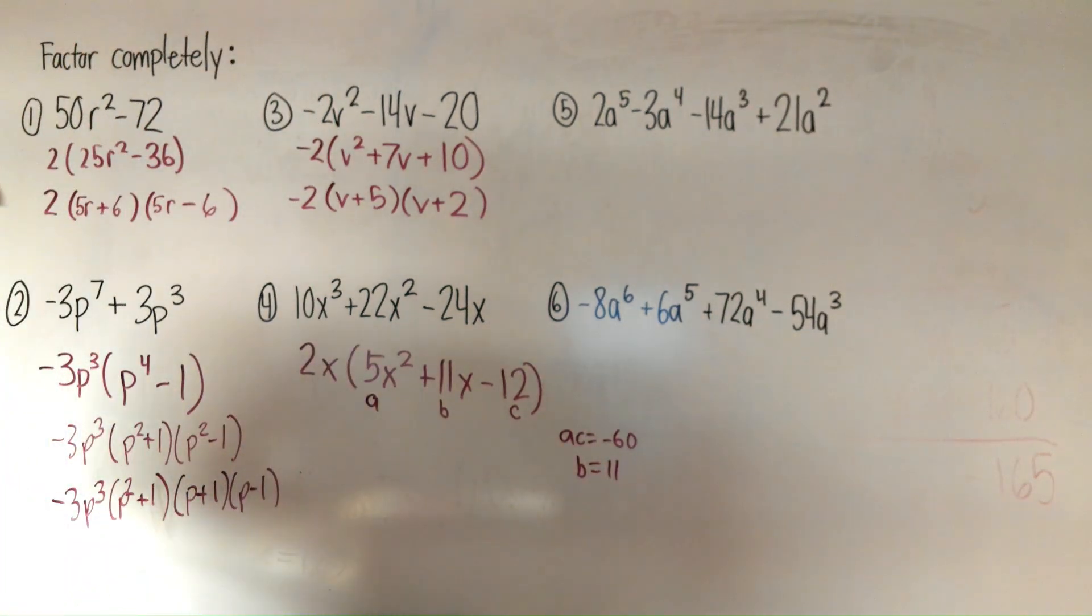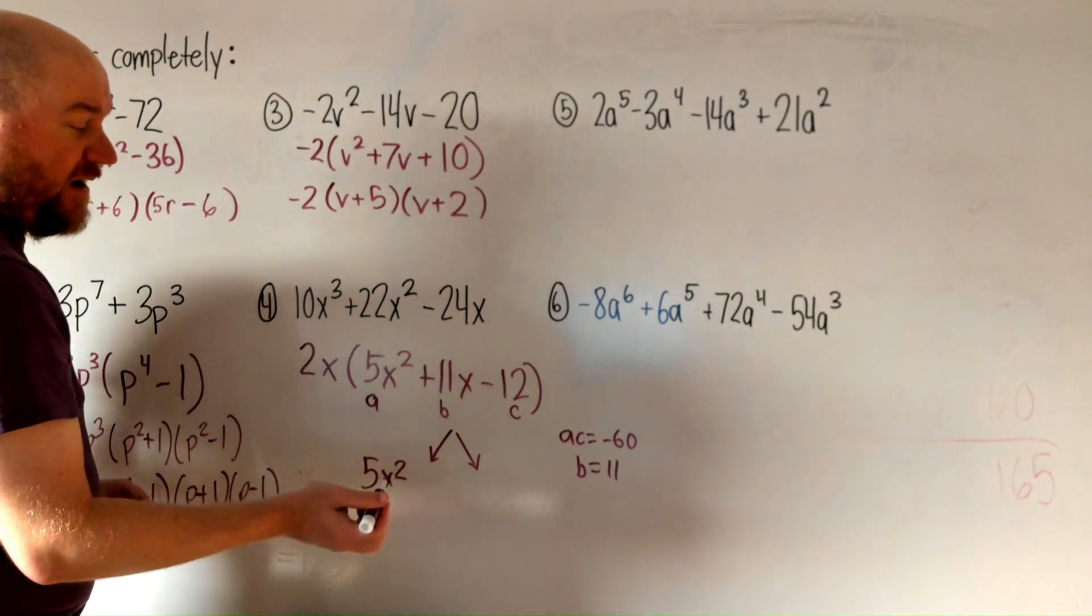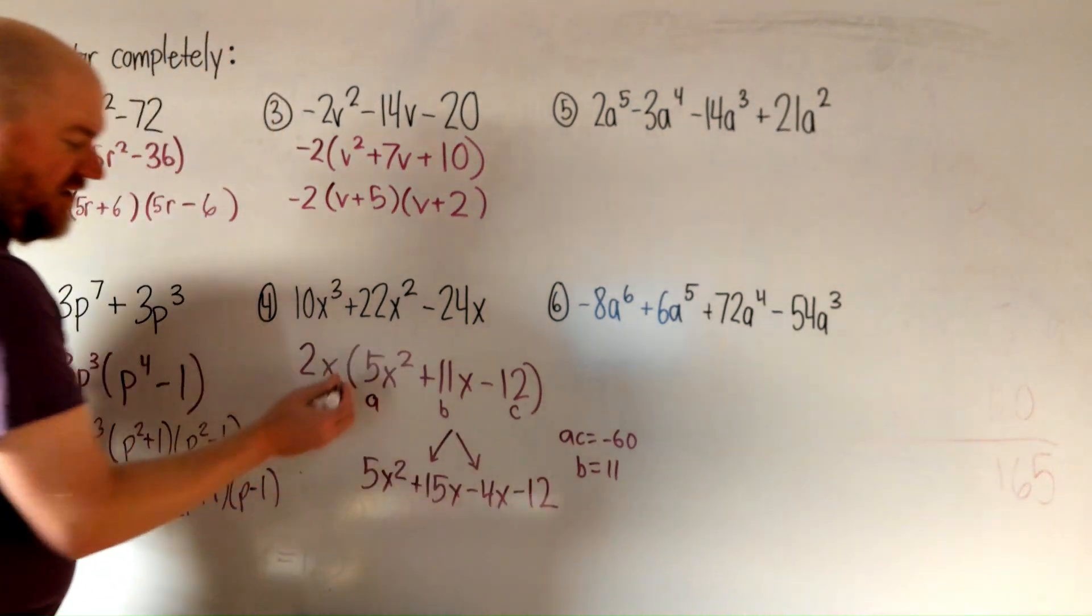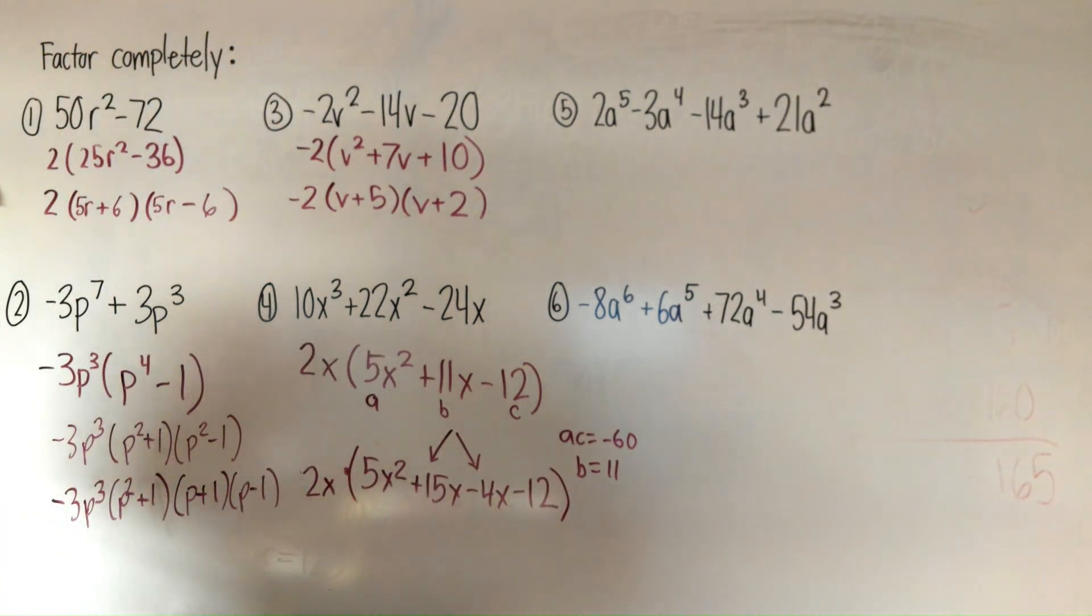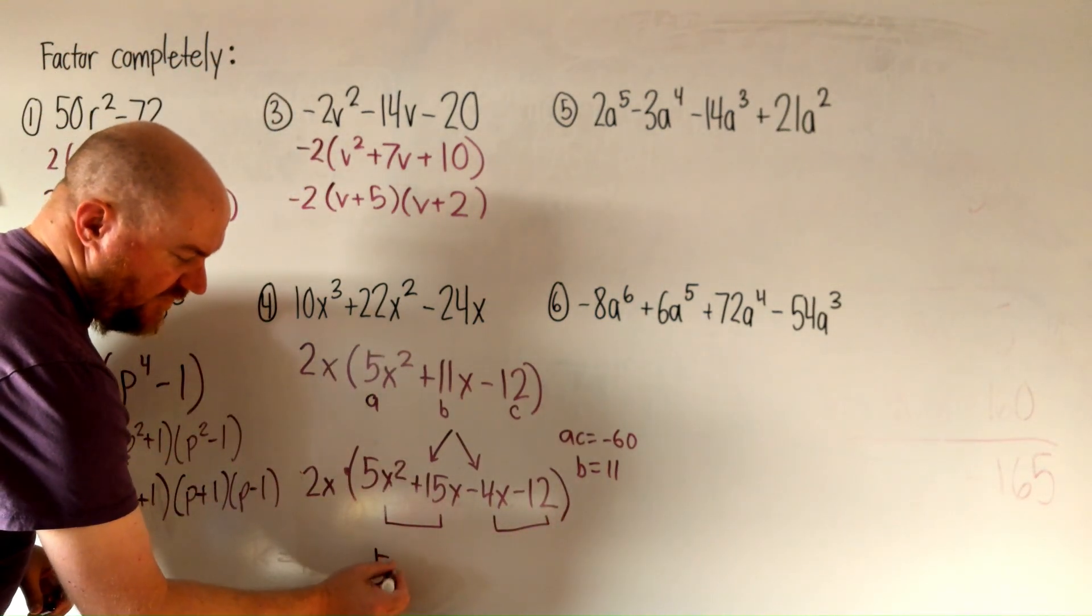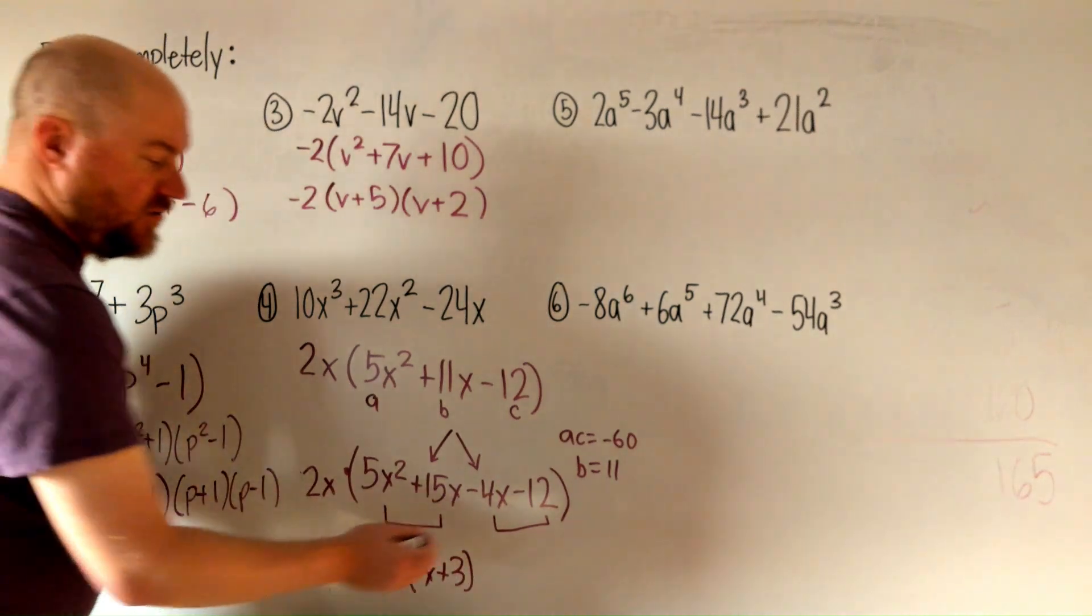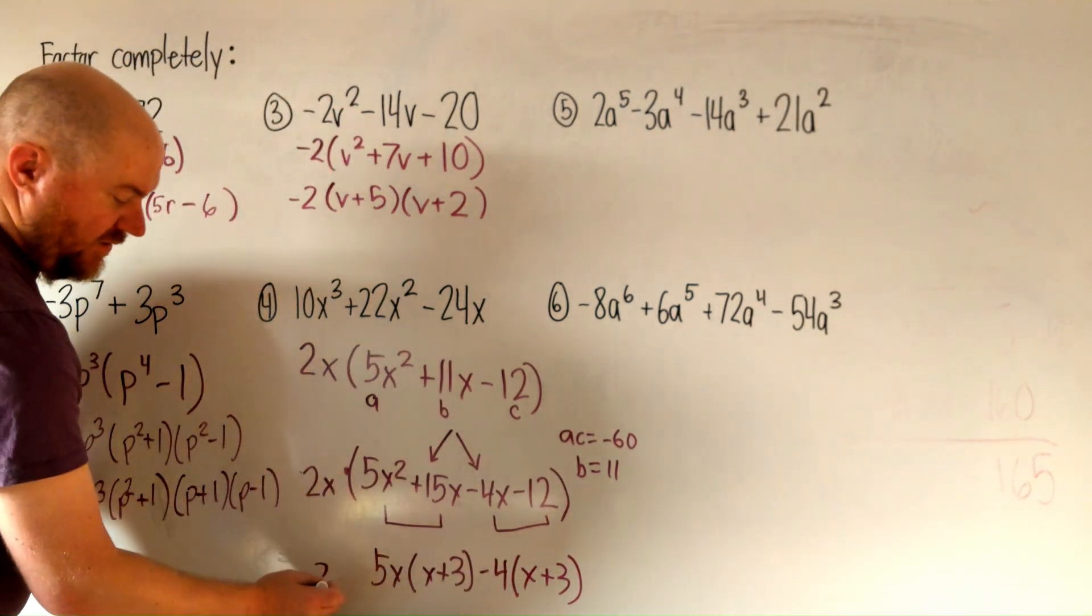So I need two numbers that multiply to negative 60 that add up to 11. So that'll be 15 and 4, and in this case it'll be, I need it to be a positive 11, so it'll be plus 15x minus 4x. And we'll just leave that 2x out from here. I'll put it in parentheses just to show separate. And then let's factor by grouping here. Let's do a GCF of these first two here. That would be the GCF is 5x, and we'll end up with x plus 3. And our second two, the GCF will be negative 4, and we'll end up with x plus 3 again. Just bring the 2x along here.